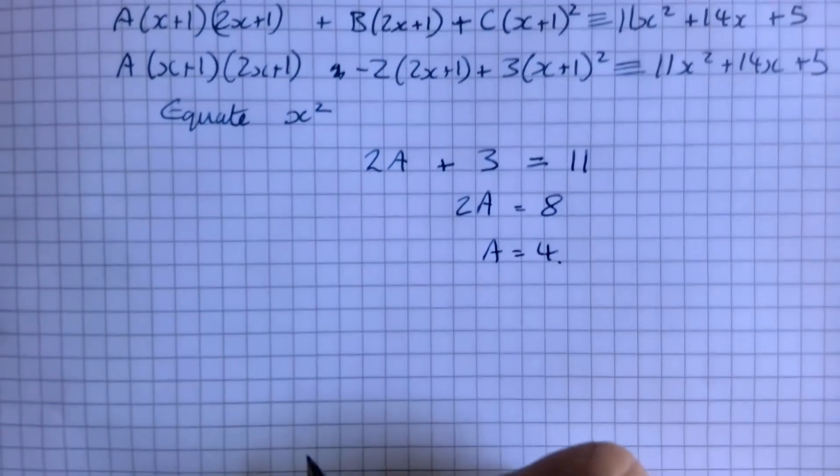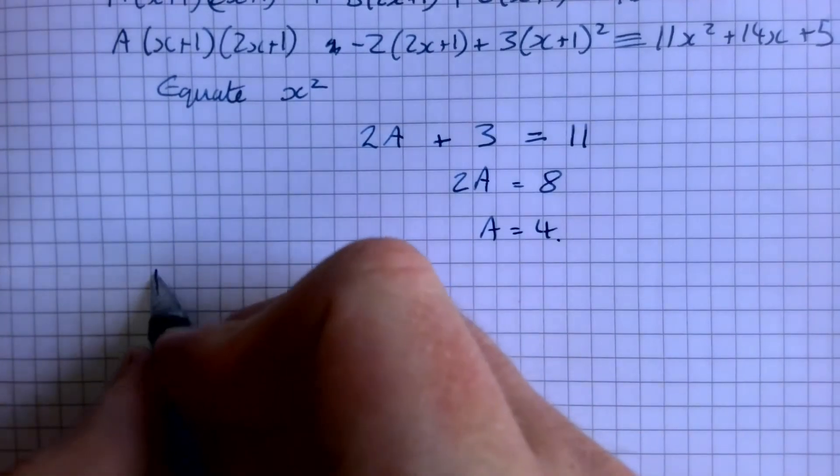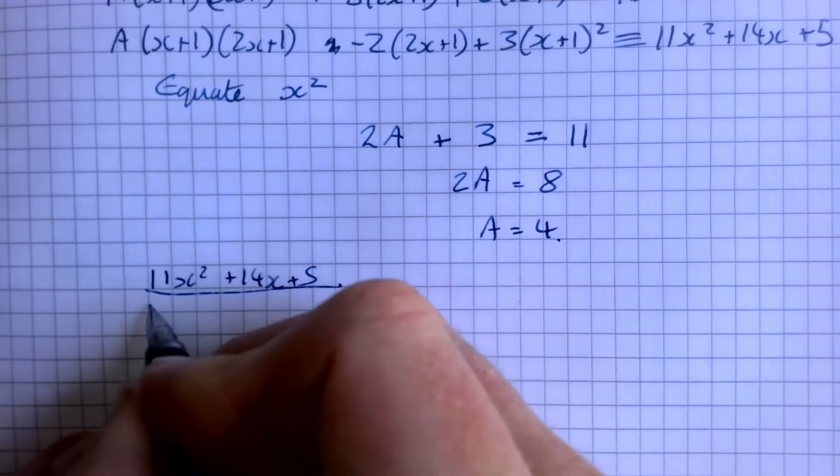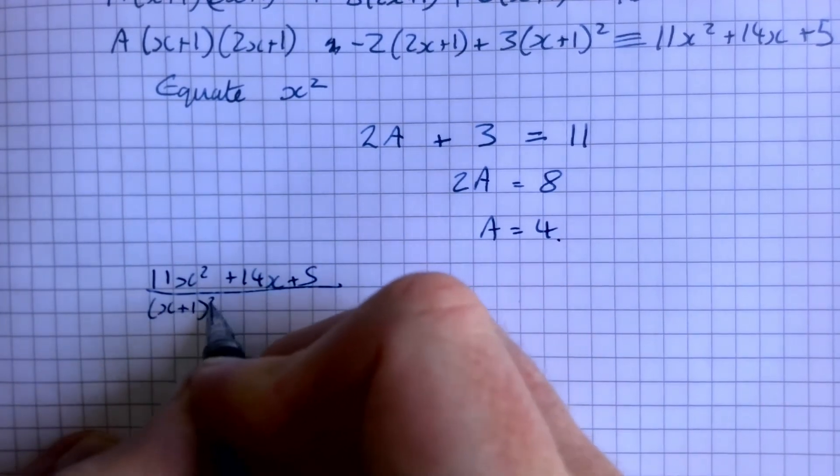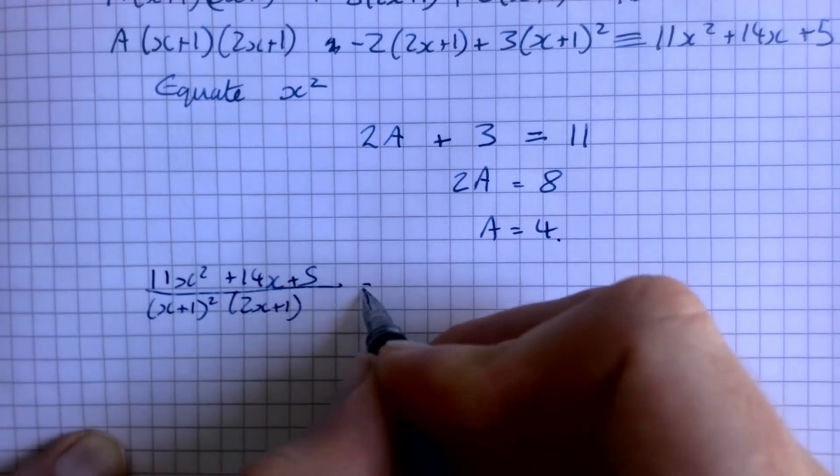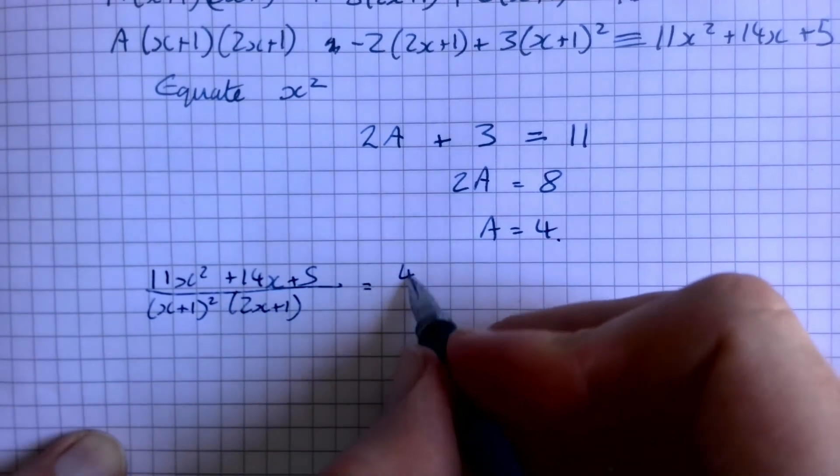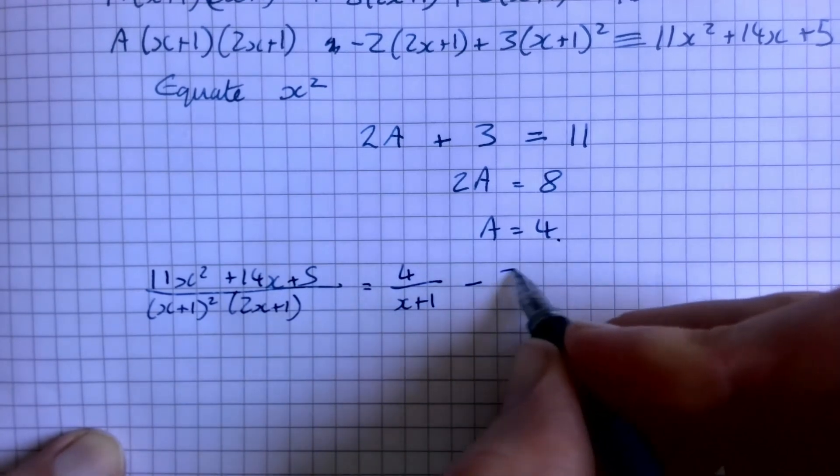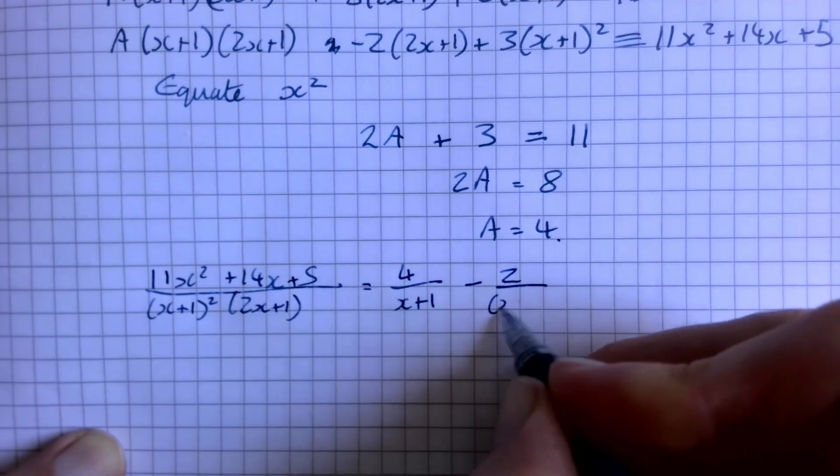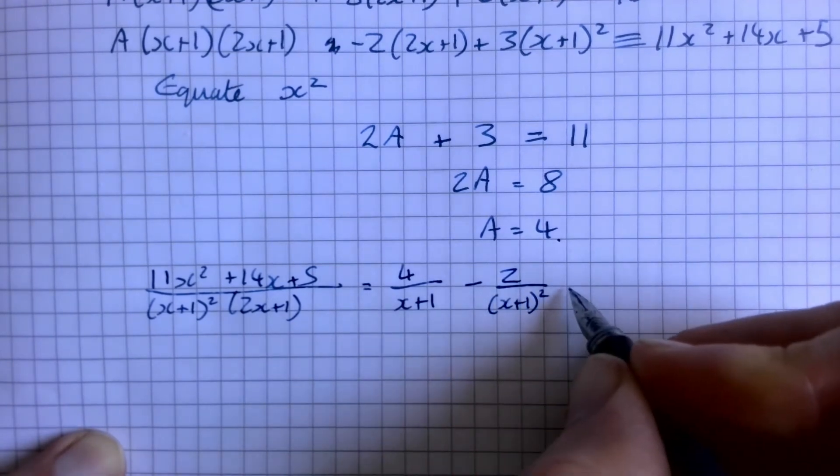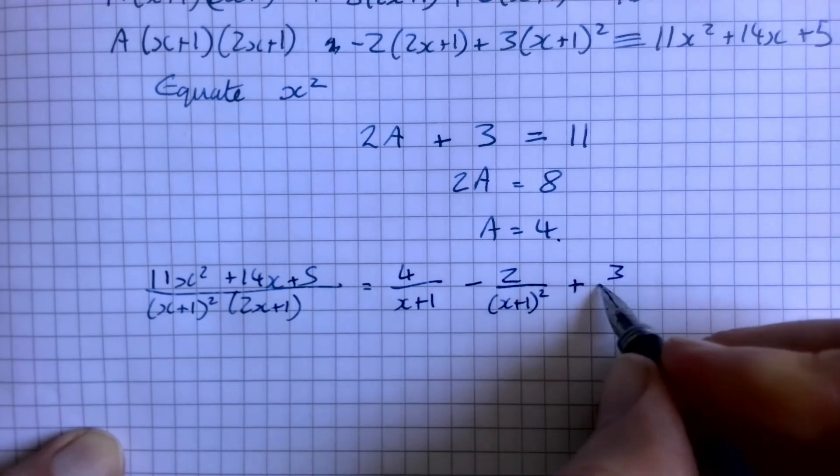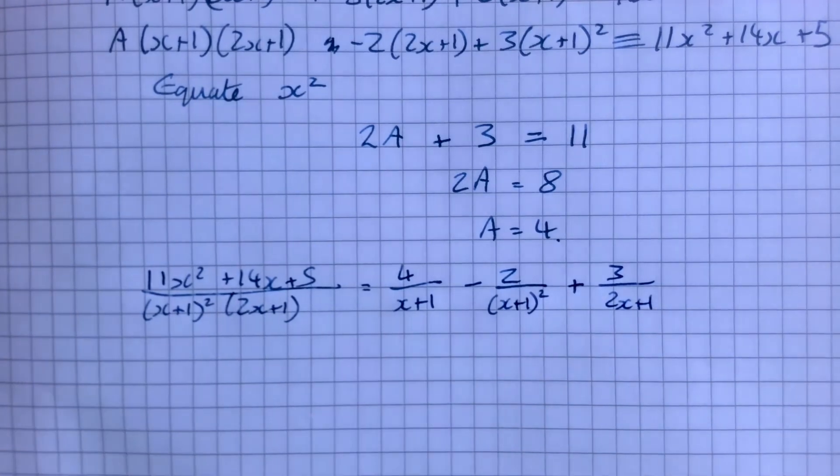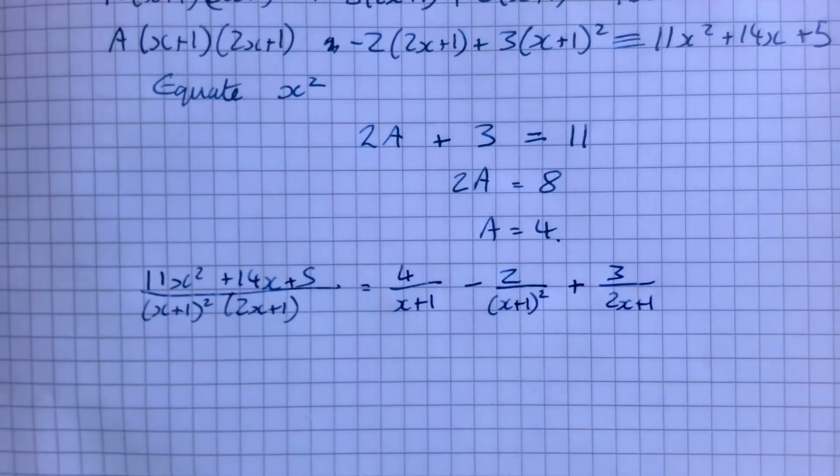And what that means is I can write my original thing out nicely at the end. So I've got my original fraction, x plus 1 squared times 2x plus 1, is now equal to A was 4 over x plus 1. B was negative 2, so I can write minus 2 over x plus 1 all squared. And then C was 3, and so that's 3 over 2x plus 1. And that's the only example I'm going to give you today, folks.